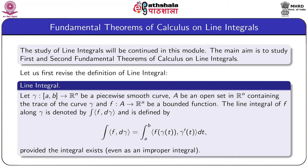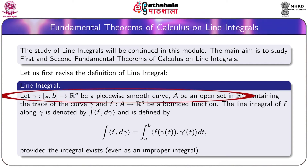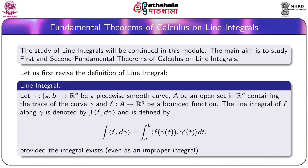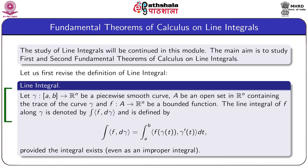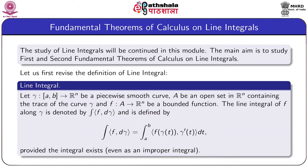Let us start with revising the definition of line integral. Let gamma from a bounded closed interval [A, B] to R^n be a piecewise smooth curve, capital A be an open set in R^n which contains the trace of the curve gamma, and F from A to R^n be a bounded function. The line integral of F along the curve gamma is denoted by the line integral of F d-gamma, and is defined as the integral of the inner product of F(gamma(t)) and gamma-dash(t) dt, where the limits are A and B, provided the integral exists even as an improper integral.